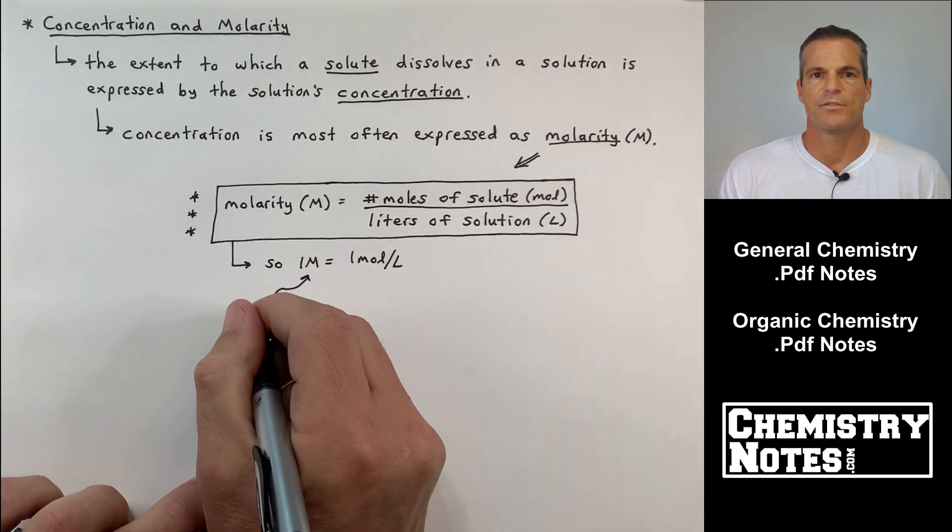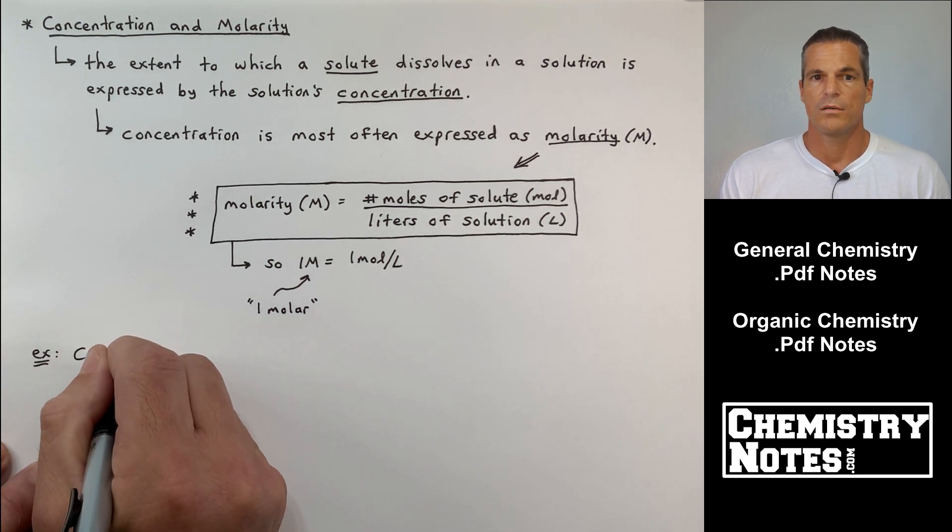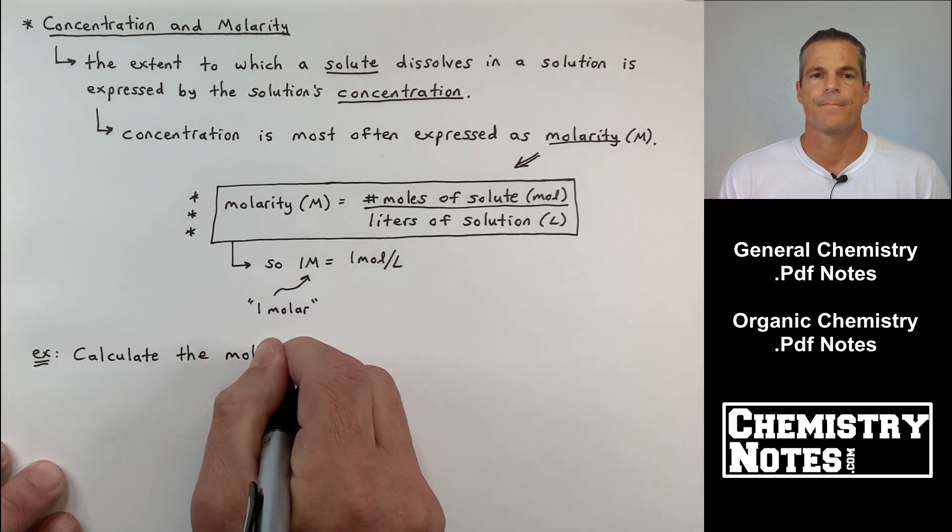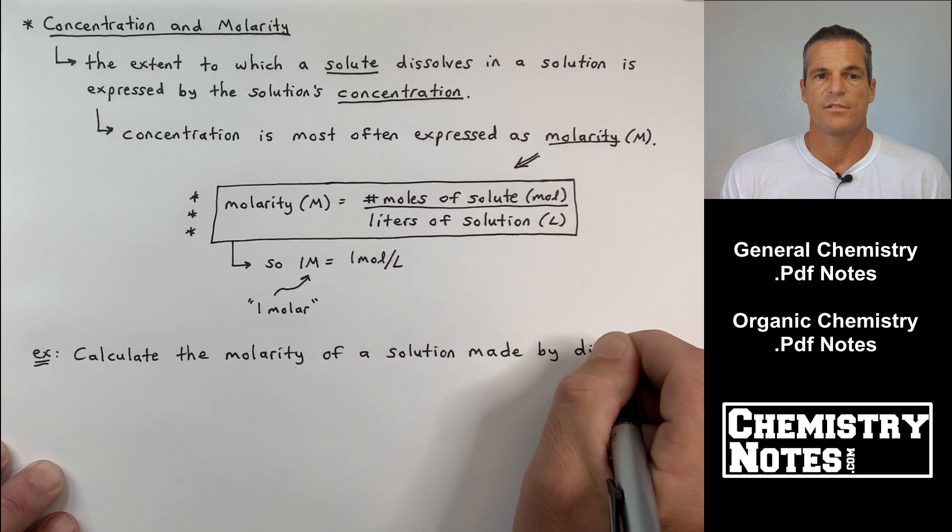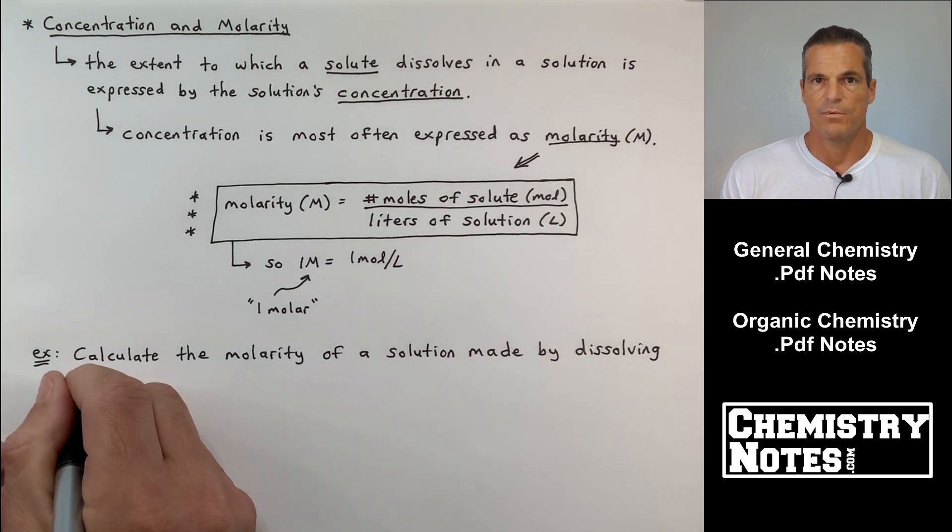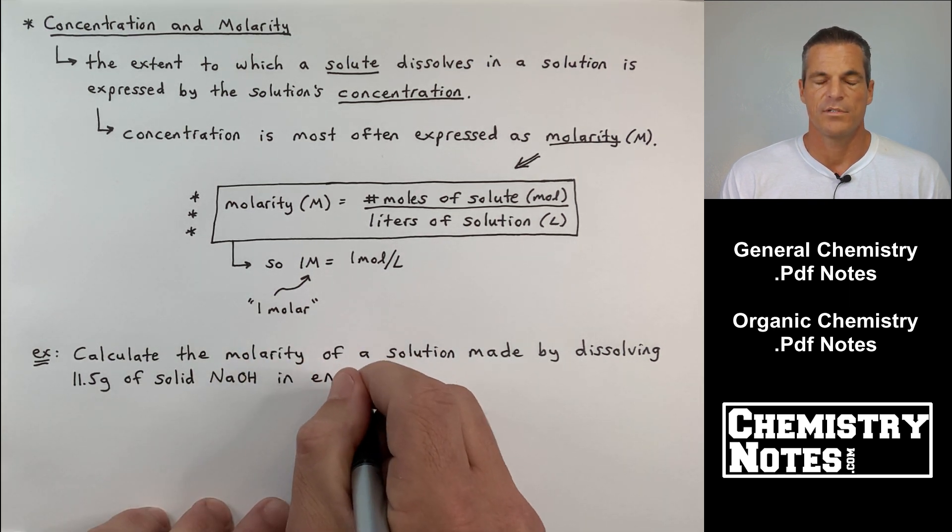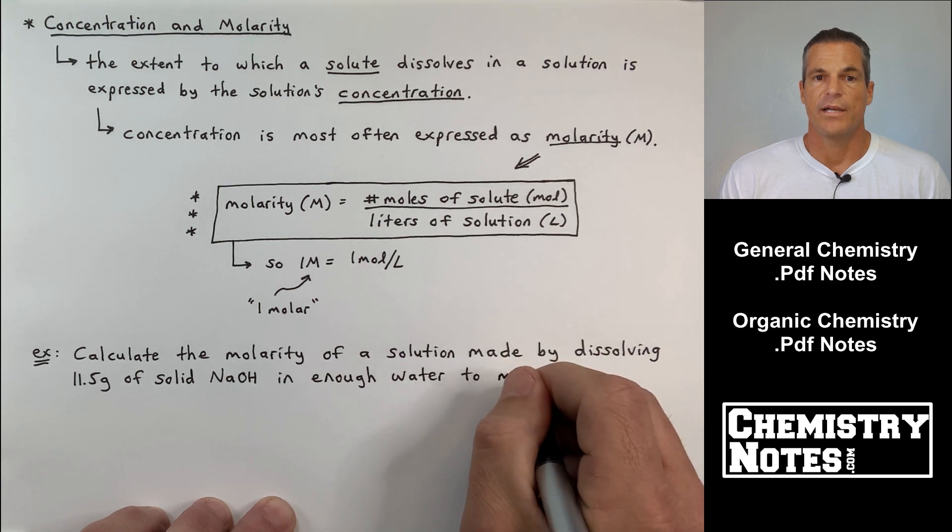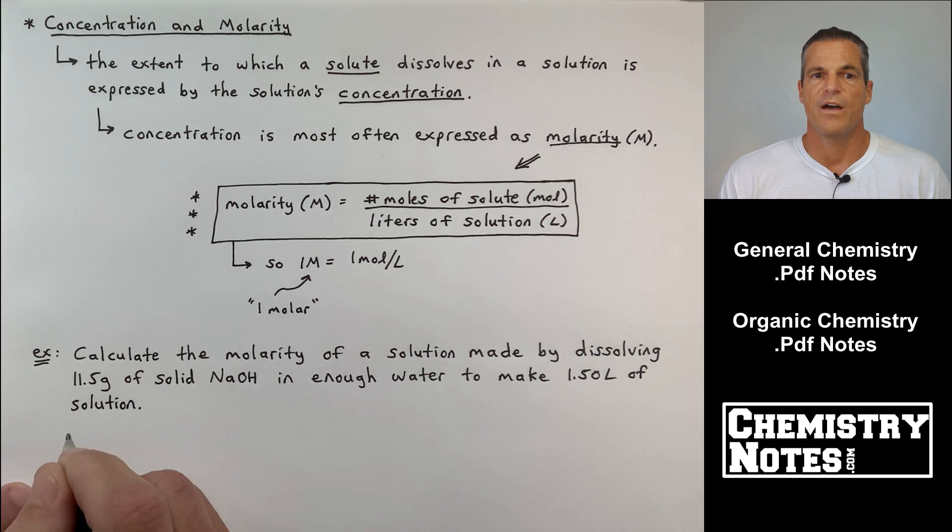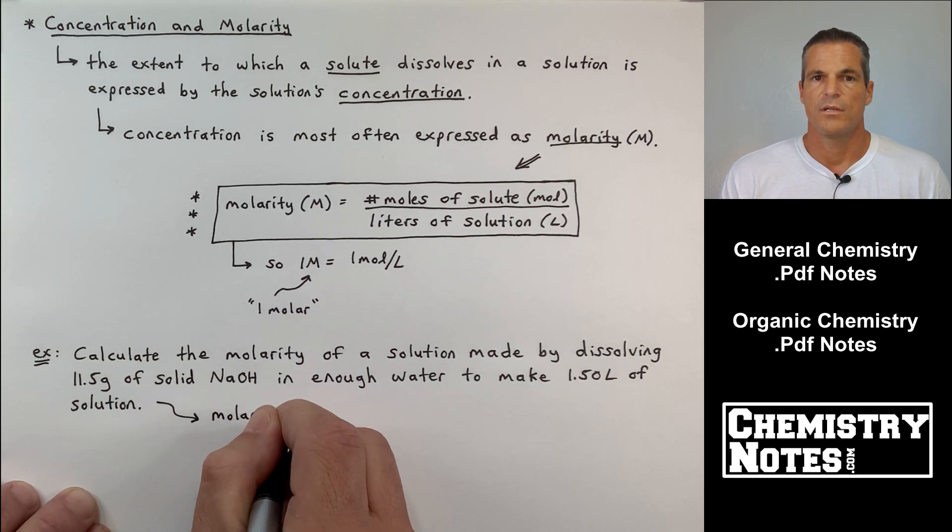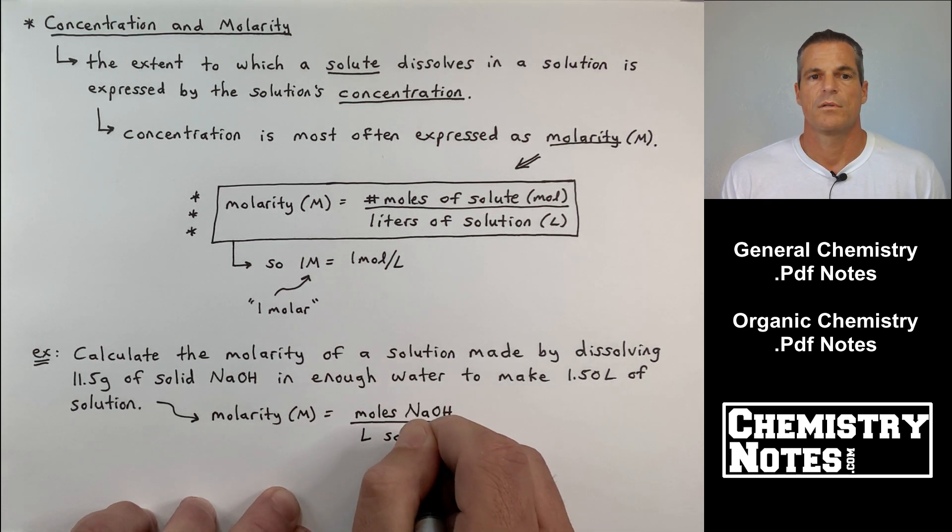So looking at the equation, molarity is moles of solute per liter of solution. In other words, one molar is equal to one mole per liter. Let's do this example. For those of you who are subscribers and you follow my notes, this is just the same example from last time because this is the easiest of, I believe, four molarity problems we're going to do today.